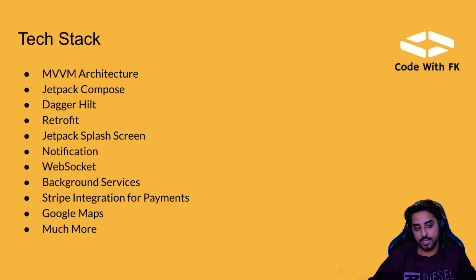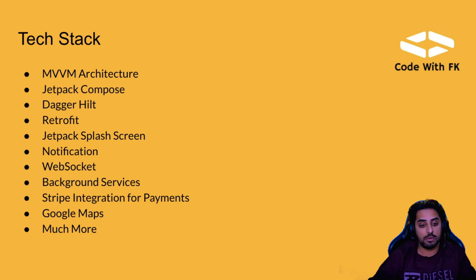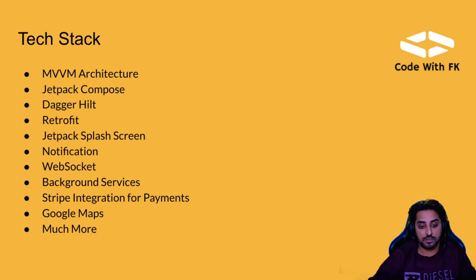The next thing is the tech stack. I have chosen to go with MVVM architecture. Along with that, we'll be using Jetpack Compose for the UI, Dagger Hilt for dependency injection, Retrofit for backend API calls, Jetpack Splash Screen SDK for handling the splash screen, notifications, WebSockets, background services, and Stripe is also in the plan. I'll see if Stripe is possible since it's not supported in the region I'm developing from — otherwise we'll implement something similar.